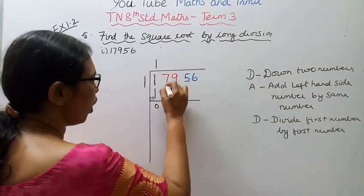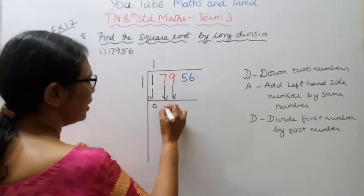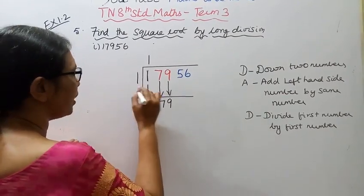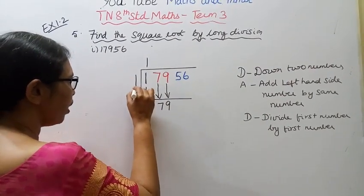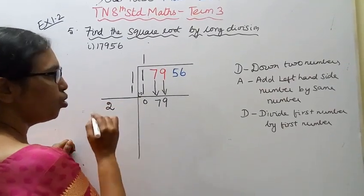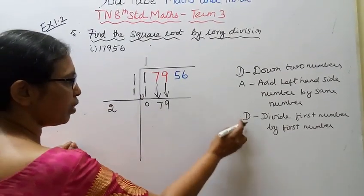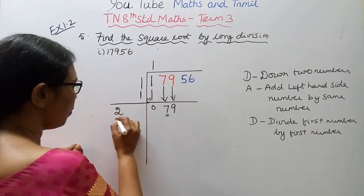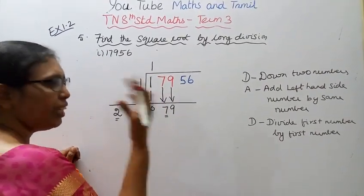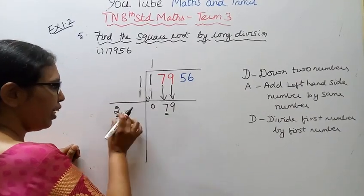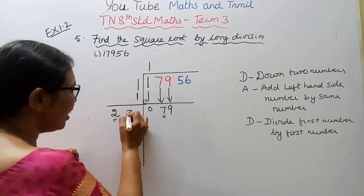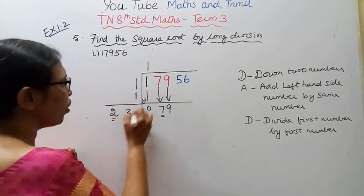Bring down the next 2 numbers: 79. Add left hand side number by same number — 1 plus 1 equals 2. Now divide: what number placed after 2 gives a product fitting into 79? Divide.